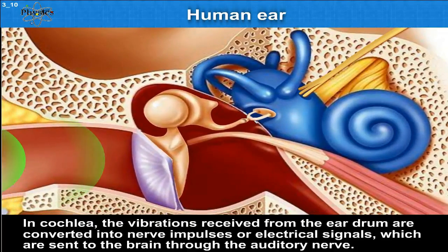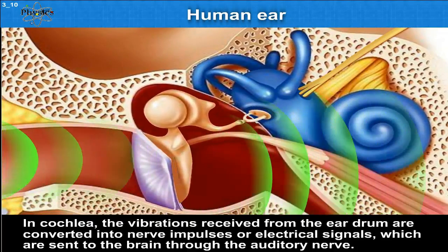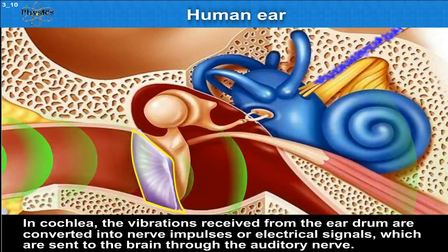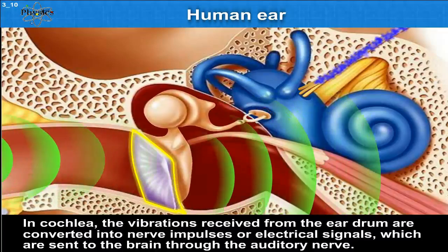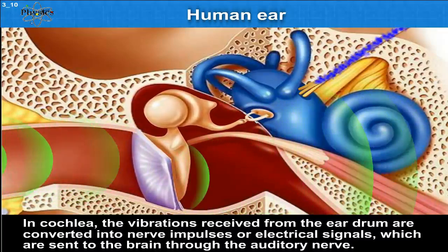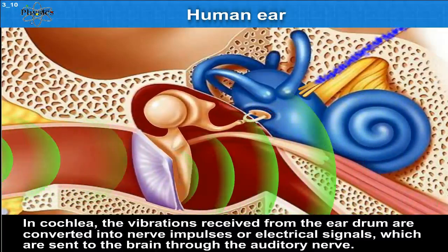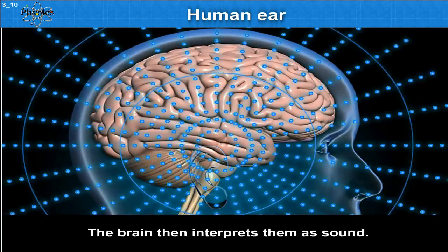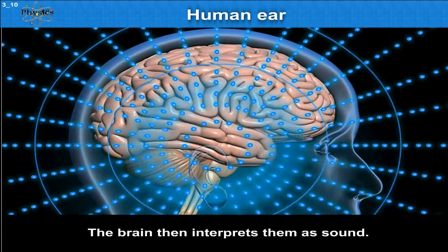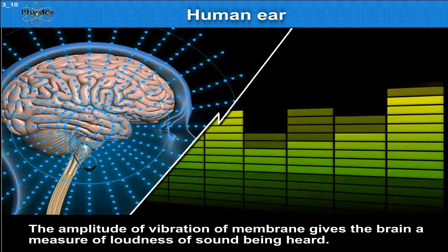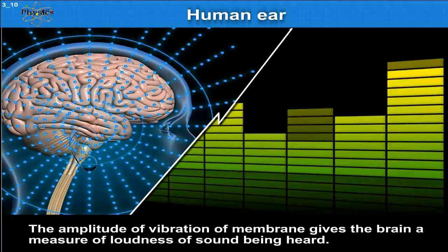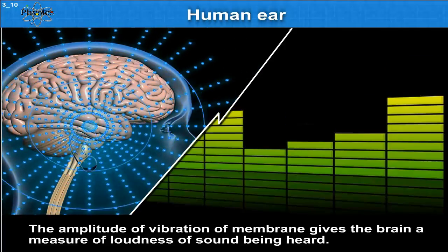In the cochlea, the vibrations received from the eardrum are converted into nerve impulses or electrical signals, which are sent to the brain through the auditory nerve. The brain then interprets them as sound. The amplitude of vibration of the membrane gives the brain a measure of the loudness of the sound being heard.